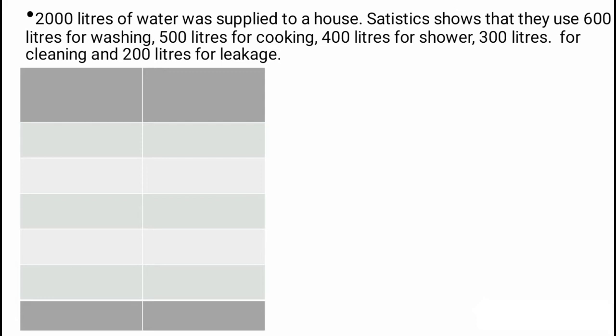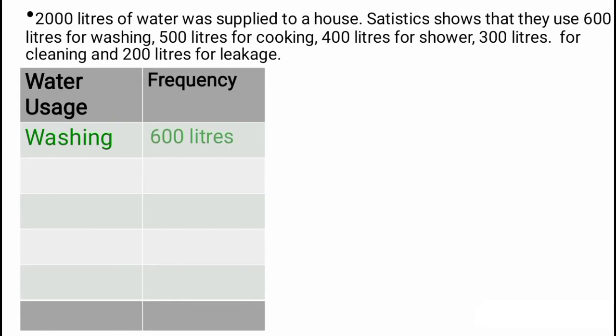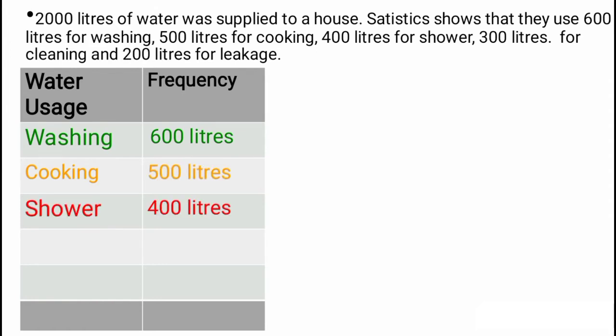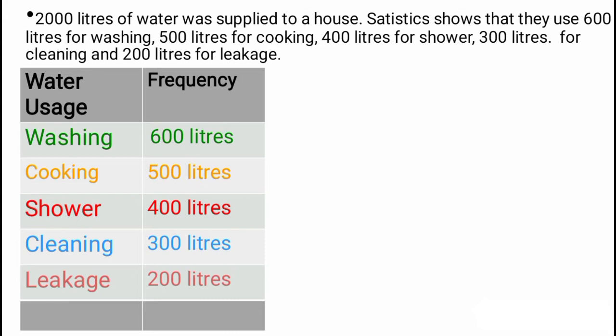The table of frequency shows you the data and the frequency — the items listed out and how many times they appear or the quantity they carry. We'll write water usage and frequency. Washing takes about 600 liters, cooking takes 500 liters, shower takes 400 liters, cleaning takes 300 liters, and leakage takes 200 liters. The last row is for total, and the total is 2000 liters.